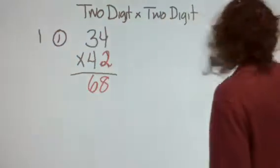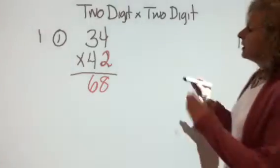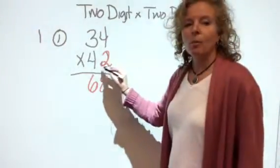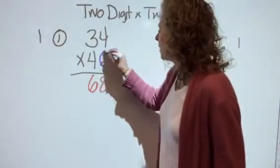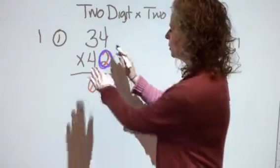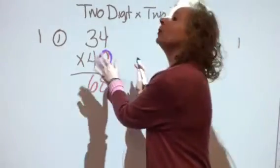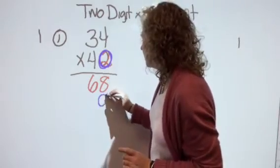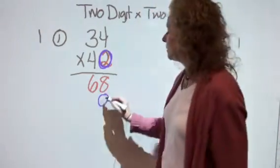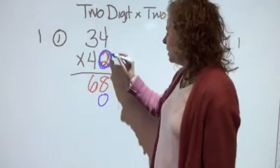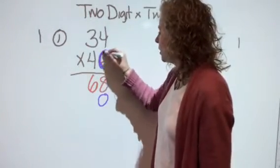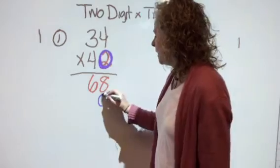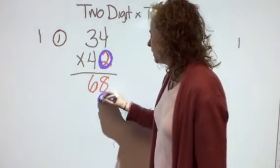All right, we finished the ones problem, but now we're going to multiply by a multiple of 10. We're going to multiply by 40. Can you see that I'm multiplying by 40? And we know when I'm multiplying by a multiple of 10, that zero, the number is going to end in zero. So I'm just going to put that placeholder in the ones place. I'm going to put a zero here to remind myself that I'm multiplying by 40, not just four.